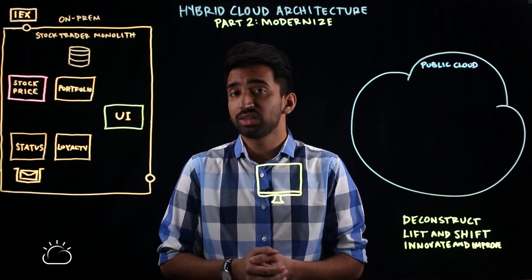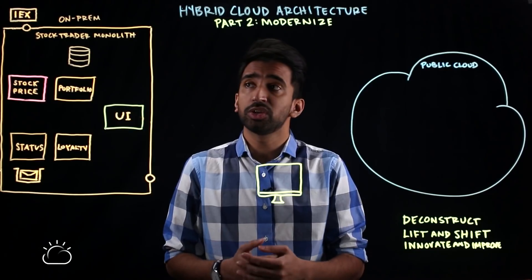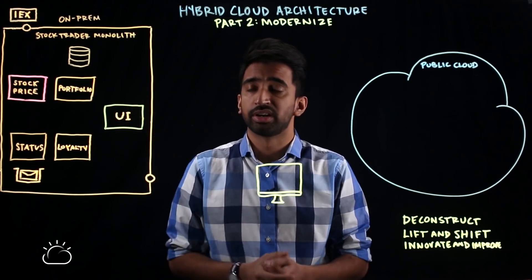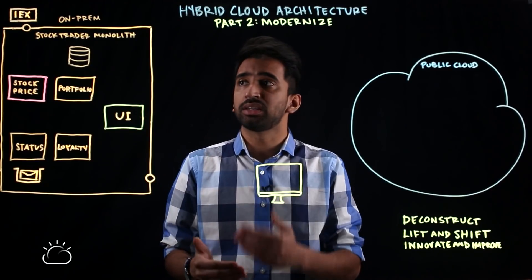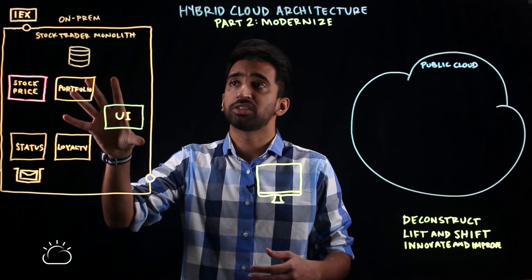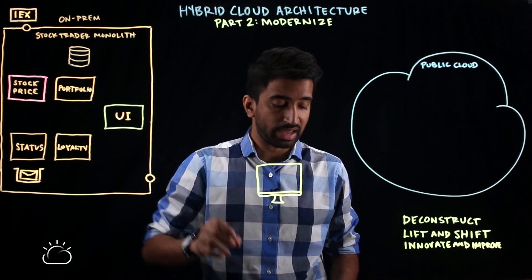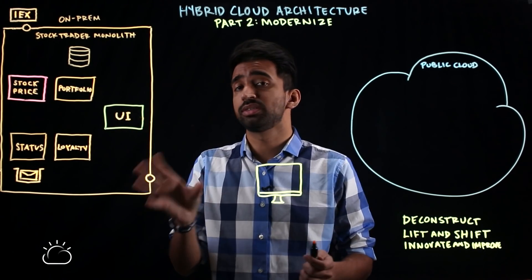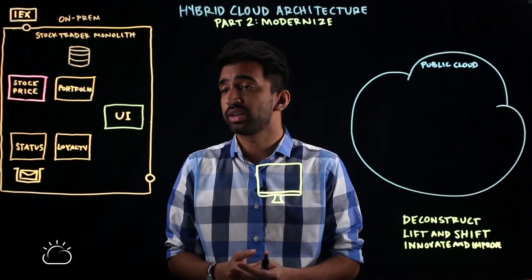In part one of the series we talked about hybrid cloud connectivity and we used a similar sample application, StockTrader. This time around we're taking a step back in time to when StockTrader was still a monolithic application running on-prem on VMs. But the architecture is mostly the same — it's using an SOA, or service-oriented architecture.